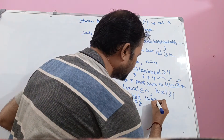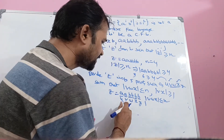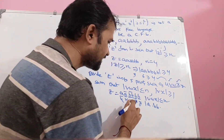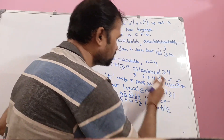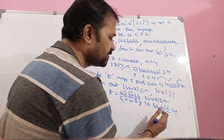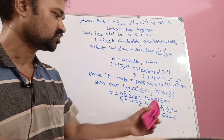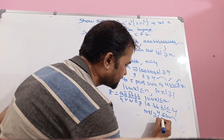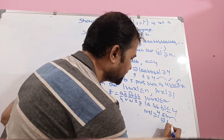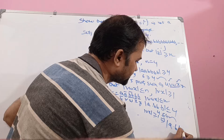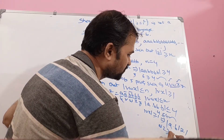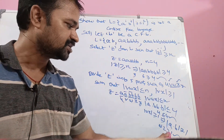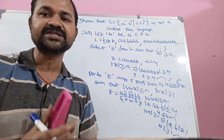Checking condition 1: |vwx| = |a, b, b| = 3, which is less than or equal to n = 4. Condition is true. Checking condition 2: |vx| = |a, b| = 2, which is greater than or equal to 1. Condition is true. So we can divide the string into these 5 parts properly, because both conditions are satisfied.